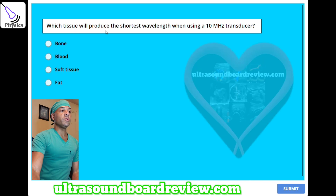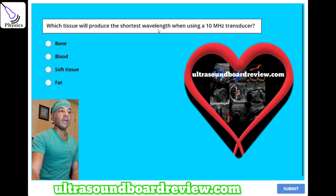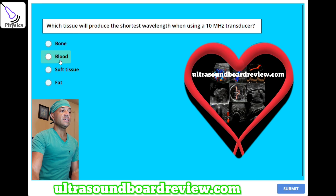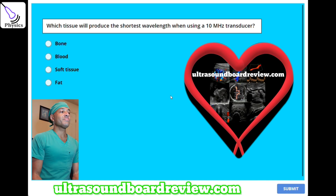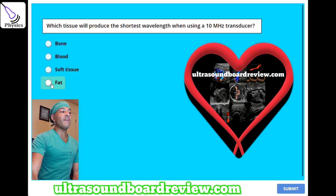Which tissue will produce the shortest wavelength when using a 10 megahertz transducer? A, bone. B, blood. C, soft tissue. Or D, fat. The answer is D — fat.